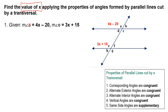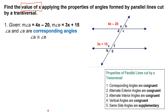Looking at the figure, angle A and angle E are actually corresponding angles. Therefore, angle A and angle E are congruent. To solve for x, we set them equal: 4x minus 20 equals 3x plus 15.